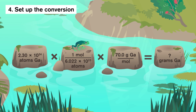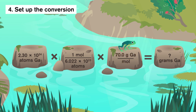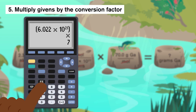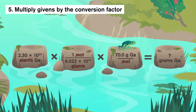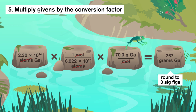Then, onto the next stone, where we'll do the same thing again with our second conversion factor. This time, the units we need are grams, and we're trying to convert from moles, so we can leave the molar mass of gallium — 70 grams per mole — right side up. Now our stones are in place, and we can step from one conversion factor to the next as the units cancel out. Atoms will cancel, and moles will cancel, and we'll be left with grams of gallium. We can plug our numbers into a calculator and multiply to get our answer: 267.353 grams of gallium. Rounded to three sig figs, 267 grams of gallium are present in 2.30 times 10 to the 24 atoms. Our multiple unit conversions are complete!